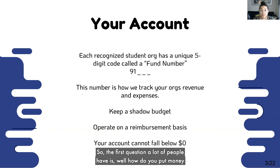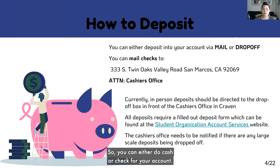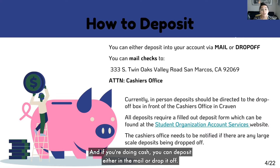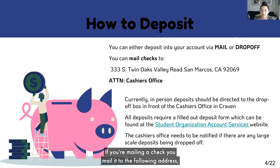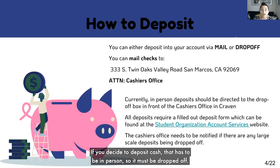The first question a lot of people have is: how do you put money into your account, or how do you deposit? You can either do cash or check for your account. If you're depositing cash, you can deposit either in the mail or drop it off. If you're mailing a check, you mail it to the following address and make sure that you put attention to the cashier's office — this is going to help route that envelope to where it needs to go. If you decide to deposit cash, that has to be in person, so it must be dropped off.